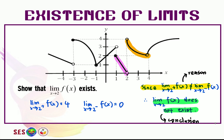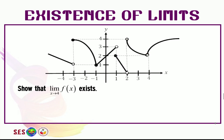With the graph, this type of question is super easy to answer. Now I want you to try this question on your own: show that the limit as x approaches 4 for f(x) exists. You need to use one-sided limits from both sides. I'll hold the screen for 3 seconds, and you can pause the video if you need more time. After that, I'll give you the answer.